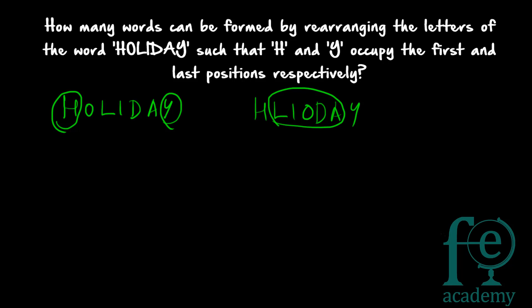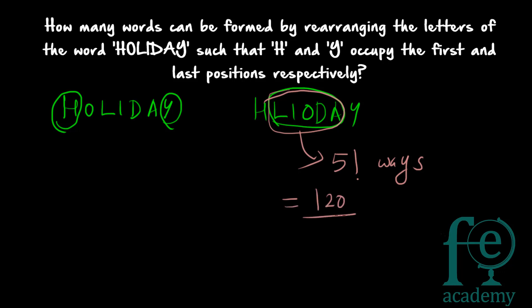So how many different arrangements are possible? You can only rearrange the five middle letters. N objects can be arranged in N factorial ways, so five letters can be arranged in five factorial ways. Five factorial equals five into four into three into two, which gives one hundred and twenty. So there are one hundred and twenty words possible. The key to solving these kinds of questions is to understand the question first - here H and Y remain constant, so the five in-between letters can be arranged in five factorial ways, giving a total of one hundred and twenty.